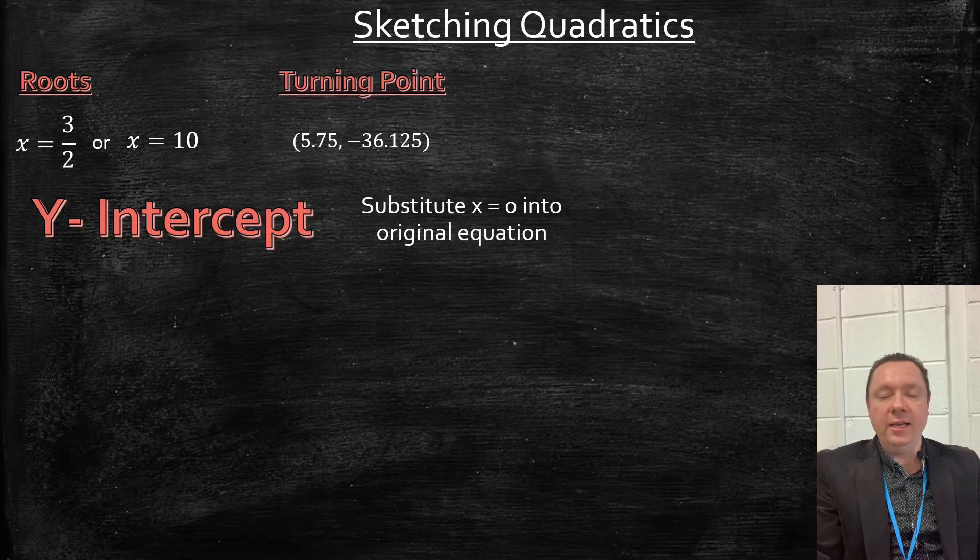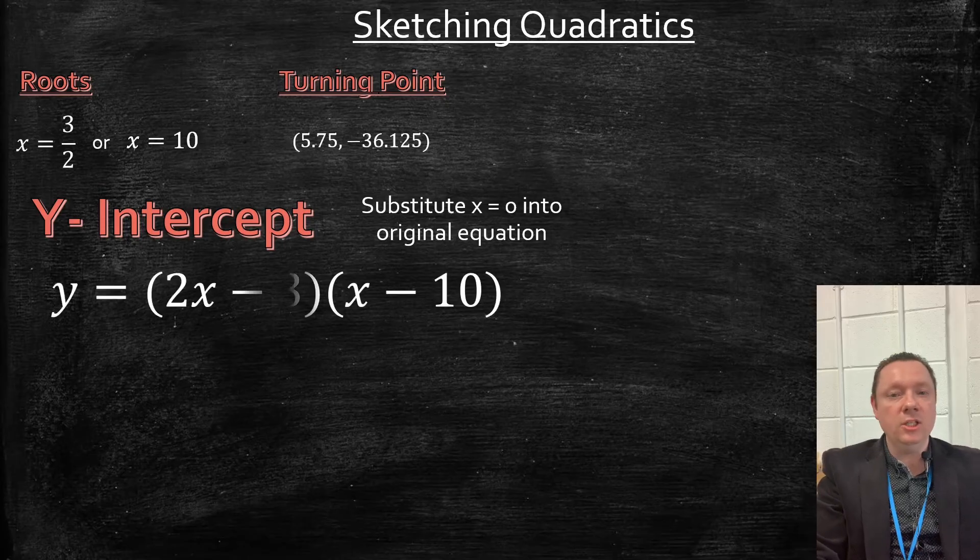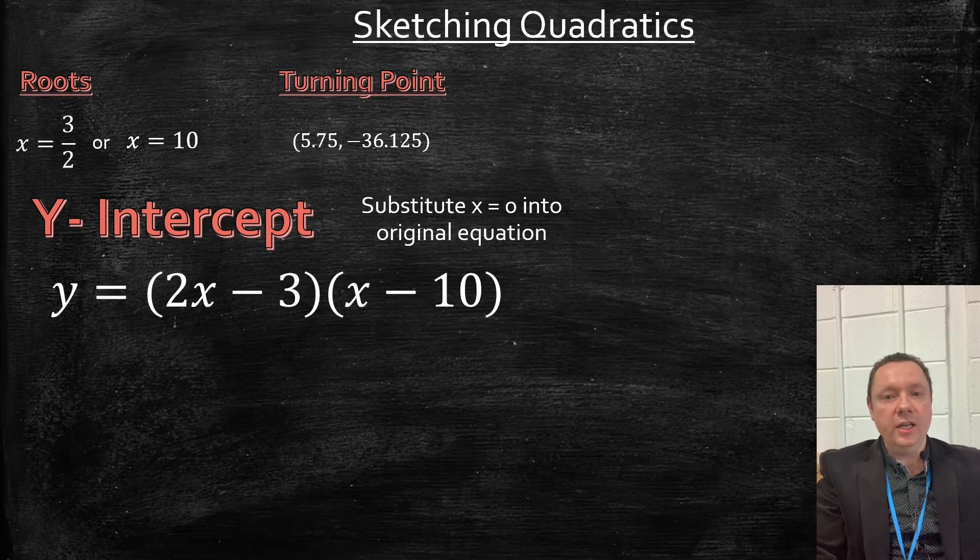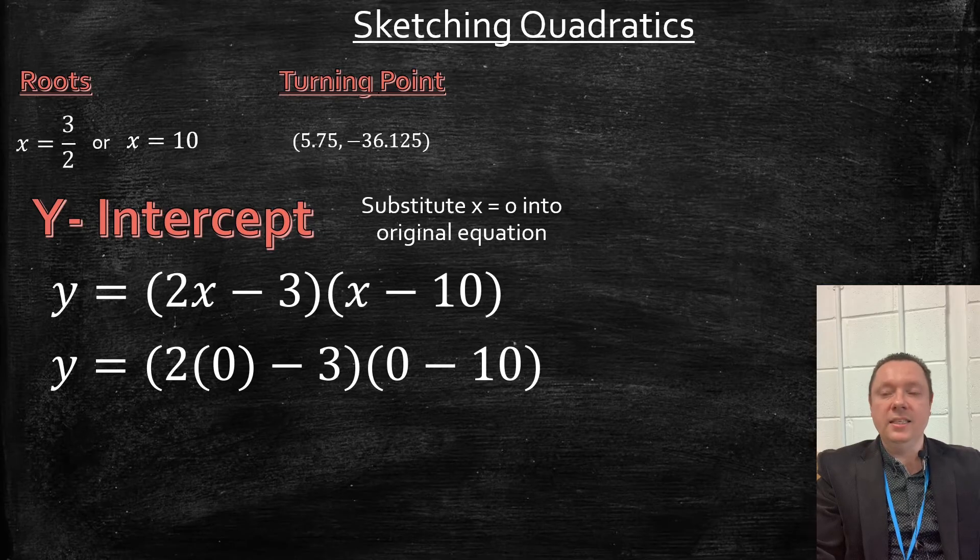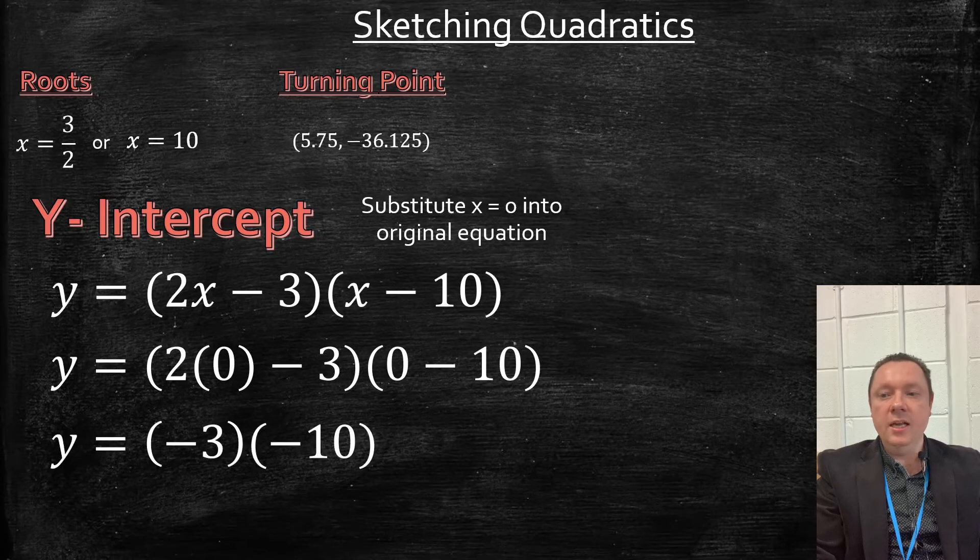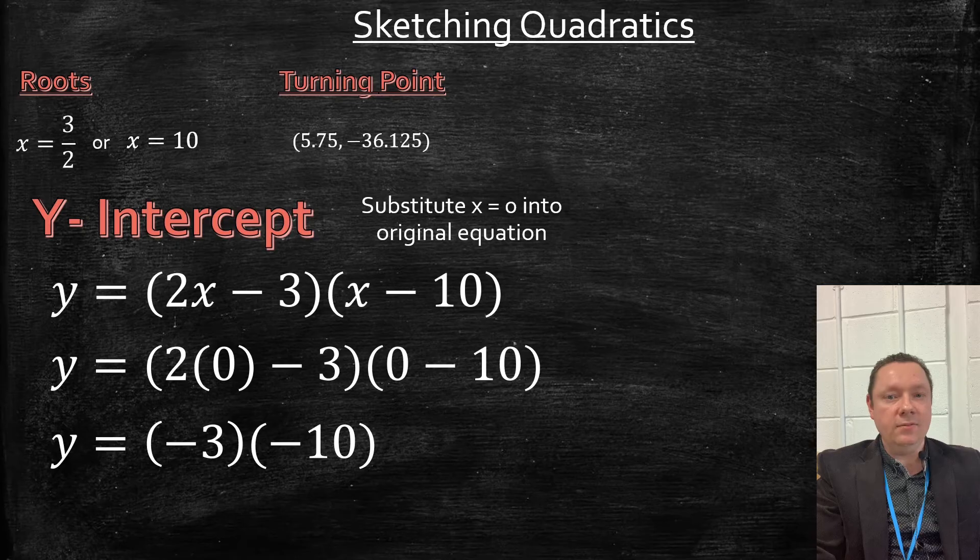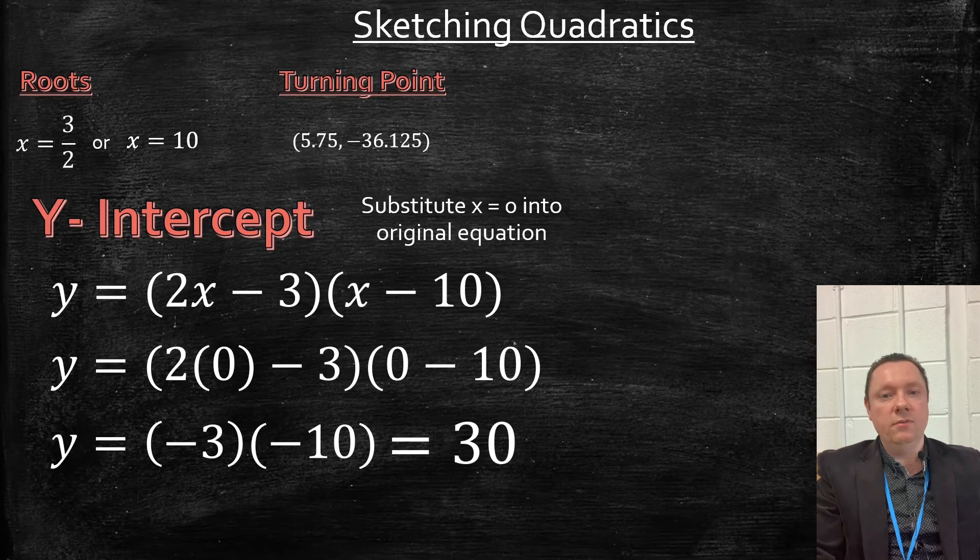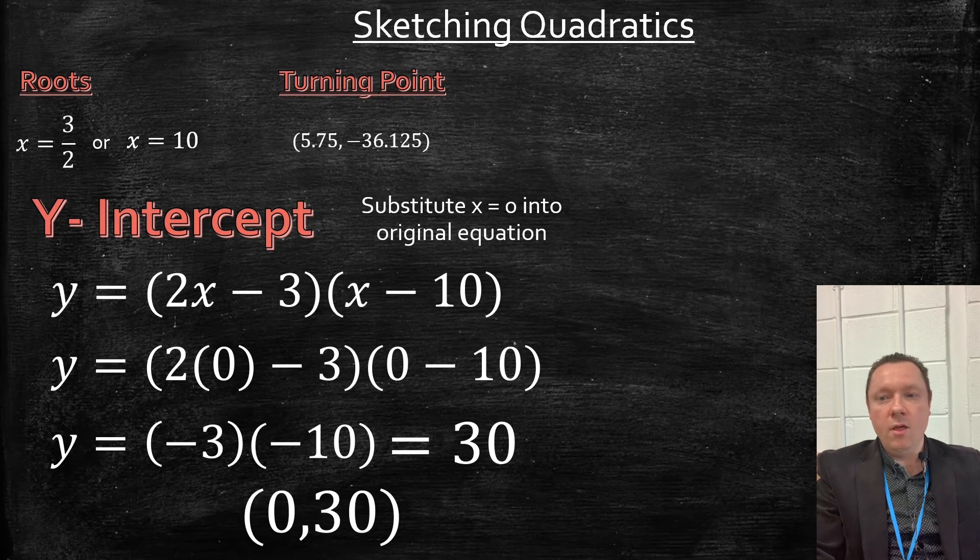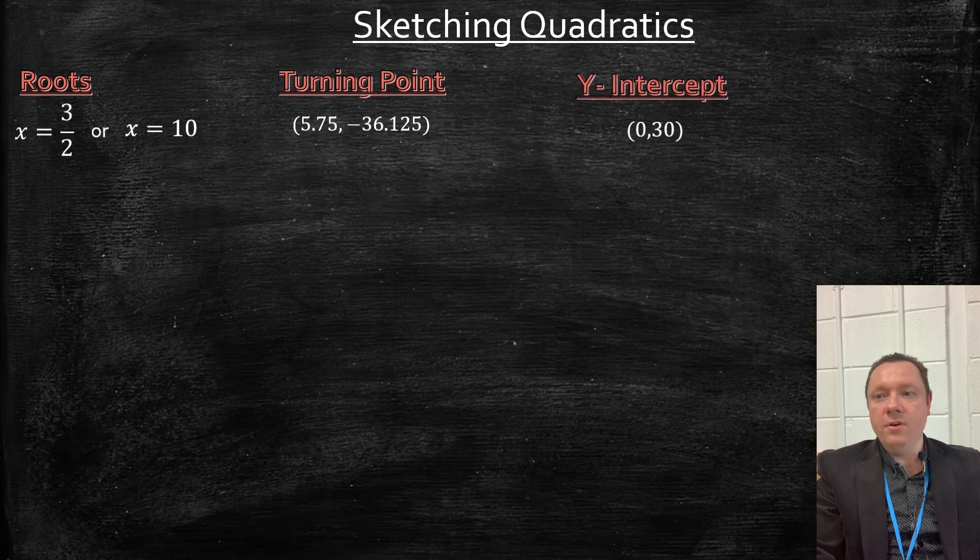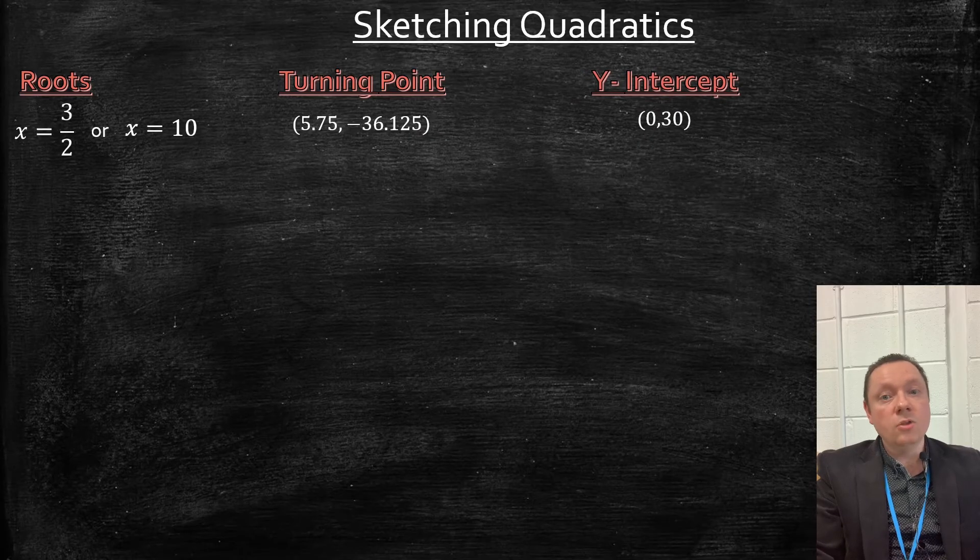We just substitute x = 0 into the original equation. So it's 2 times nothing minus 3 and 0 minus 10. That gives you -3 times -10. Negative times a negative is a positive, so positive 30. As a coordinate, that gives us (0, 30). We've now got everything we need to draw a little sketch of this.